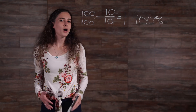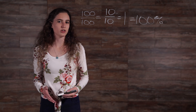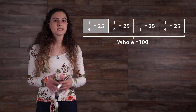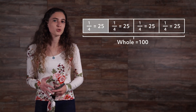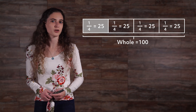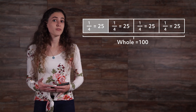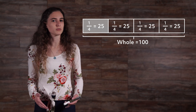But what happens when our fraction is less than 1? Consider the fraction 1 over 4. Visually, this is what's happening. We can see in the diagram that 1 fourth of the whole is 25 over 100. 25 over 100 means 25 per 100, so it equals 25%.